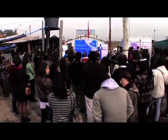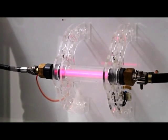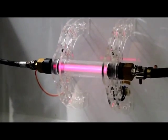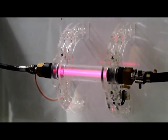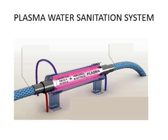The PWSS utilizes production of ozone, UV rays, hydroxyl radicals, pyrolysis, and shockwaves. The PWSS has an advantage over other plasma water treatment technologies, as the plasma is the flowing water itself, and all the disinfecting processes are immediately introduced into the water. Here is the general setup of the plasma water sanitation system. The PWSS plasma is a glow discharge. High-pressurized water and air are fed into the plasma tube.